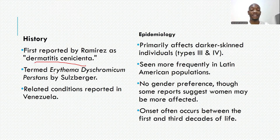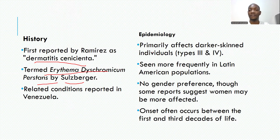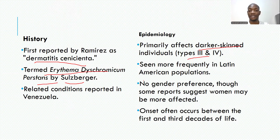Salzberg described about 150 cases of this condition. It primarily affects dark-skinned individuals with skin types three and four, but can also extend to Fitzpatrick skin types up to six.